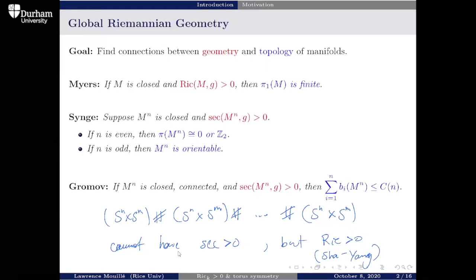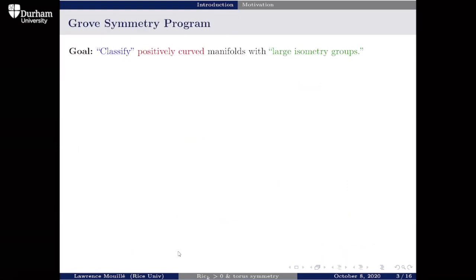So that's some background in this area. I'd like to move on to the Grove symmetry program. Karsten Grove in the 90s suggested the following objective: classify positively curved manifolds that have large isometry groups. This has gained a lot of traction because it's allowed many results in global Riemannian geometry. 'Classify' can mean up to diffeomorphism, homeomorphism, or homotopy equivalence. 'Large isometry groups' is deliberately vague — you can take it to mean whatever you want.